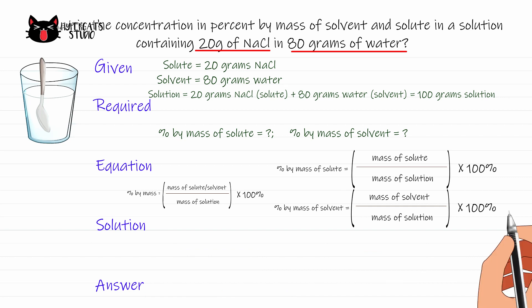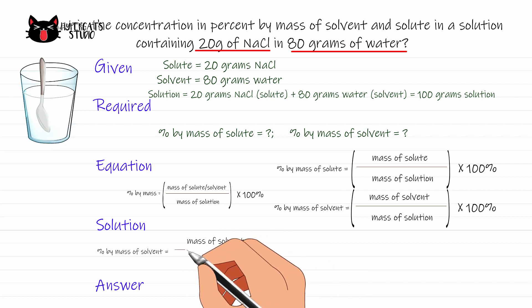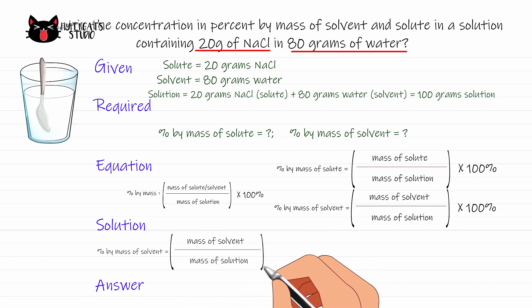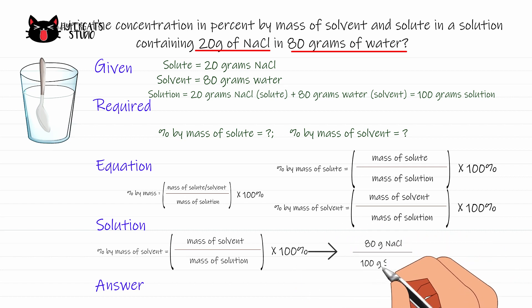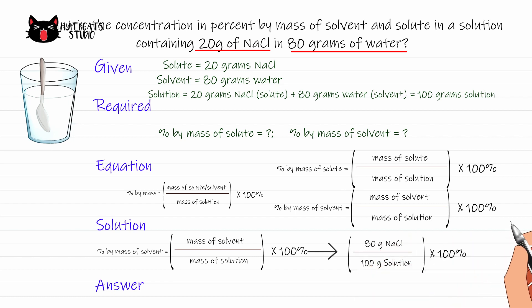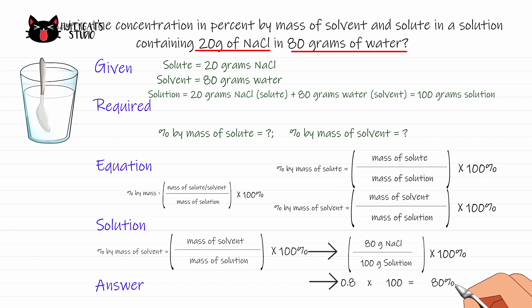Next, let's find the percent by mass of solvent. Percent by mass of solvent equals mass of solvent divided by mass of solution, times 100. Substituting the given values: 80 grams of water divided by 100 grams of solution equals 0.8. Then 0.8 times 100 equals 80%. Therefore, water is 80% of the entire solution.